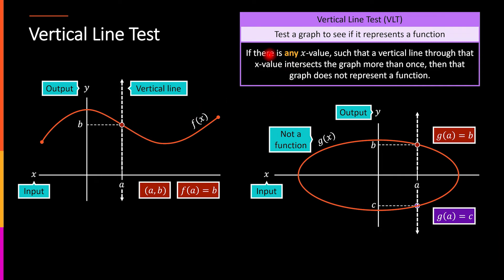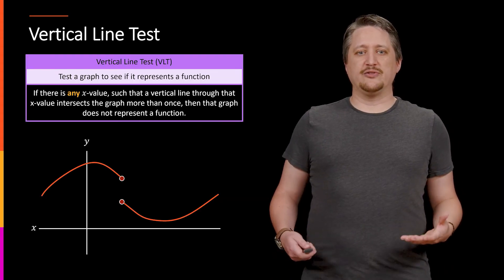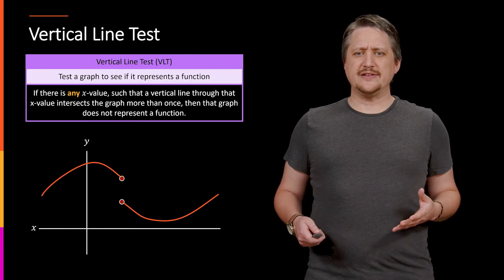But the key here, the easy to miss part, is actually this part about if there's any x value. What that tells me is that I have to test all of the x values to see if any of them fail. It's possible that it might fail in only one spot. So let's look at an example here.